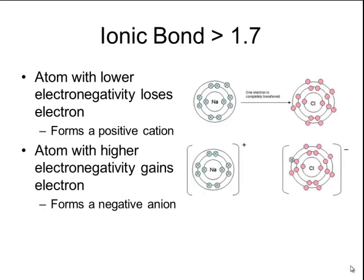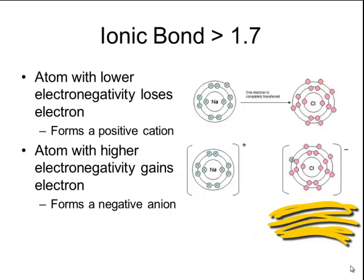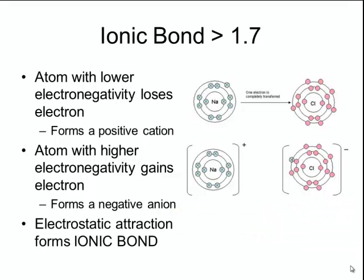Atoms that have a higher electronegativity will tend to gain those electrons. Chlorine has seven valence electrons in its outermost shell and only needs one more in order to become stable like its nearest noble gas. So it will gain the one electron lost by sodium to form a negatively charged anion. The sodium ion is positively charged and the chlorine ion is negatively charged, so there is an electrostatic attraction between those two particles — opposite charges attract — and that's what forms the ionic bond.